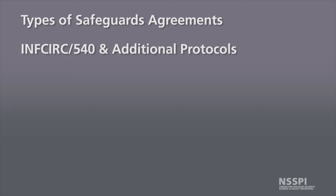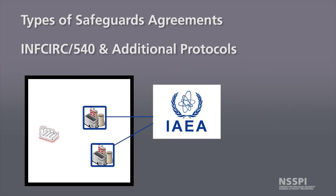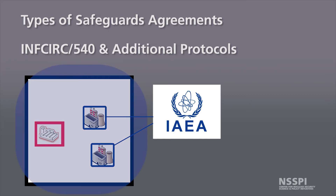We also have INFCIRC/540 and additional protocols, which are more directed at undeclared proliferation activity. The INFCIRC/153 and INFCIRC/66 safeguards agreements are applied to declared facilities with declared materials. INFCIRC/540 and the additional protocols give the IAEA power to look at the rest of the state in general, allowing for environmental sampling, multi-entry visas for inspectors, and overall increased access. So if there is an undeclared facility in our fictional state, the IAEA has capability to detect that activity.